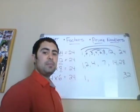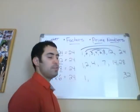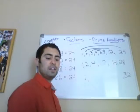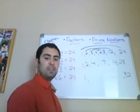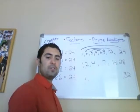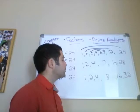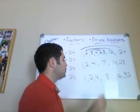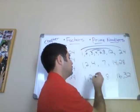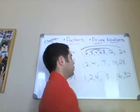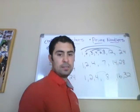Go ahead and give me the factors for 32. Pause the video and come back when you're done. All right, there are your factors for 32: 1 and 32, 2 and 16, and 4 and 8.